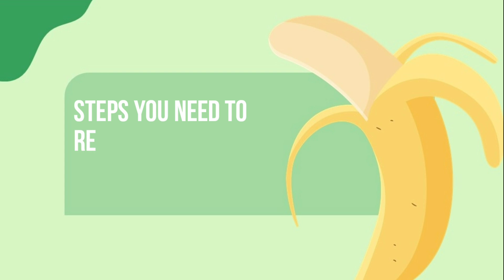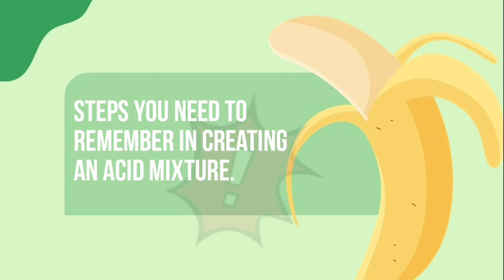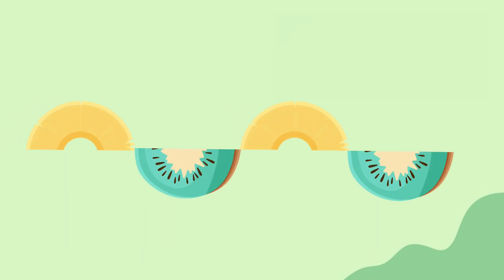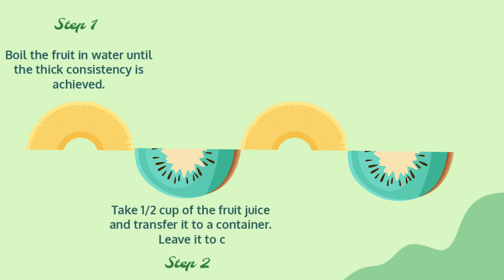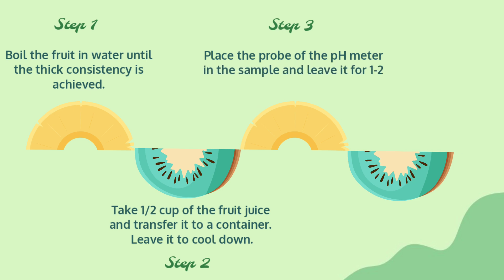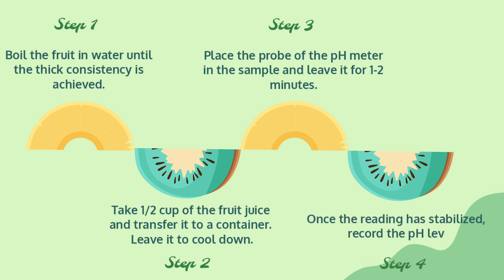Here are the steps you need to remember in creating an acid mixture. Step 1: Boil the fruit in water until the thick consistency is achieved. Step 2: Take one half cup of the fruit juice and transfer it to a container. Leave it to cool down. Step 3: Place the probe of the pH meter in the sample and leave it for one to two minutes. Step 4: Once the reading has stabilized, record the pH level.